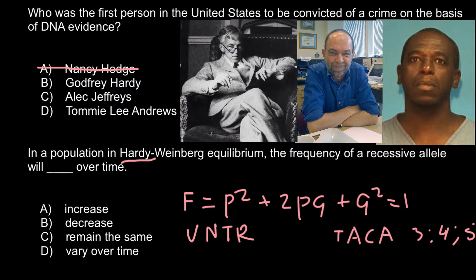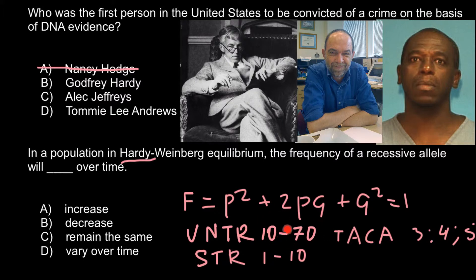The first technique was named Variable Number of Tandem Repeats, or VNTR. VNTR used fragments where tandem repeats were repeated between 10 and 70 times. Later, a different technique was invented called STR — Short Tandem Repeats — where the repeats are between 1 and 10 units. As you can see, this variant produces more variation, since someone might have 10, 11, or 12 repeats up to a wide range.